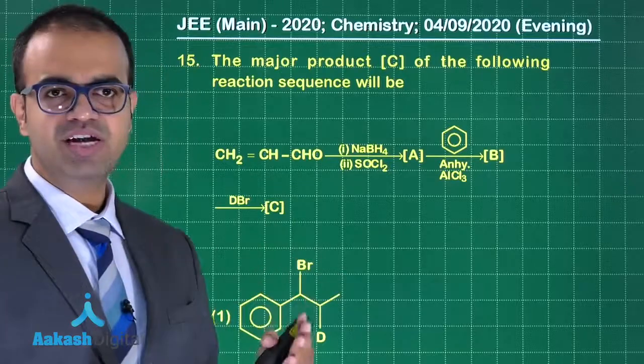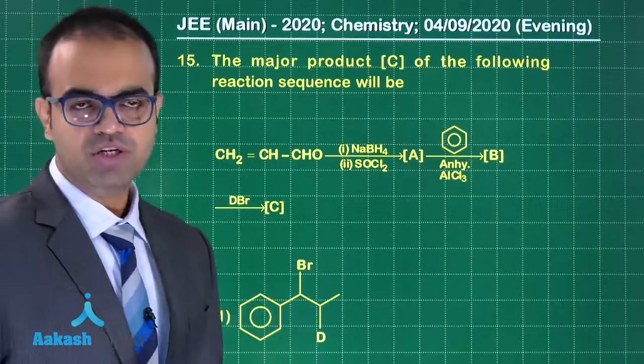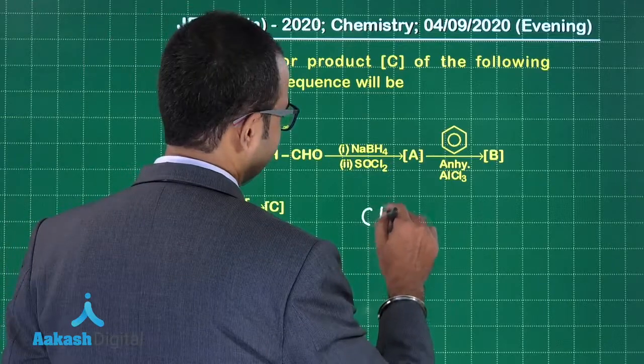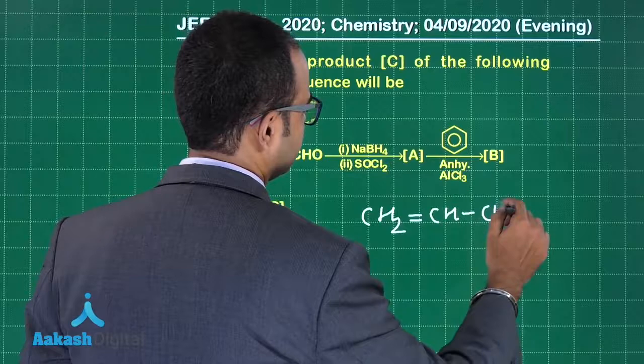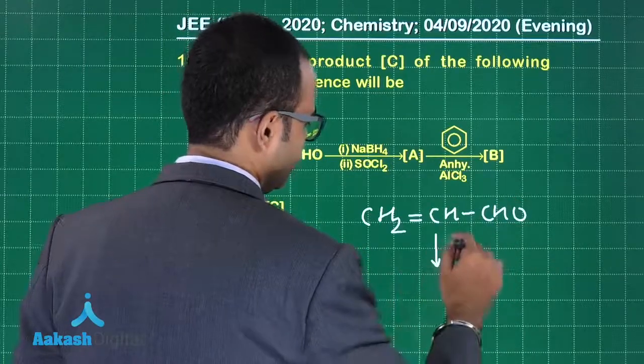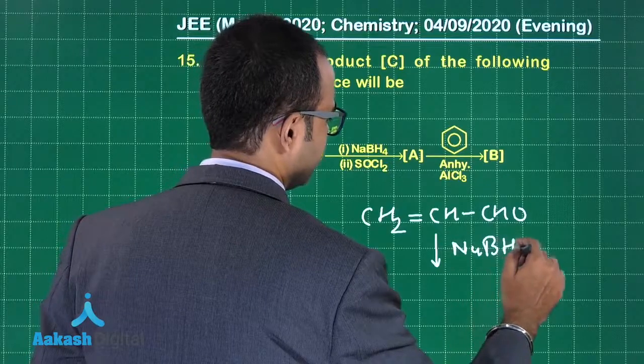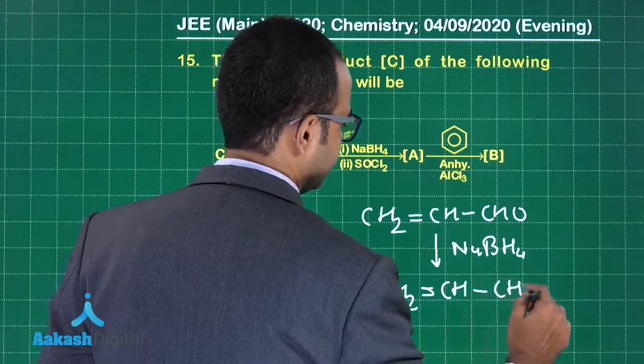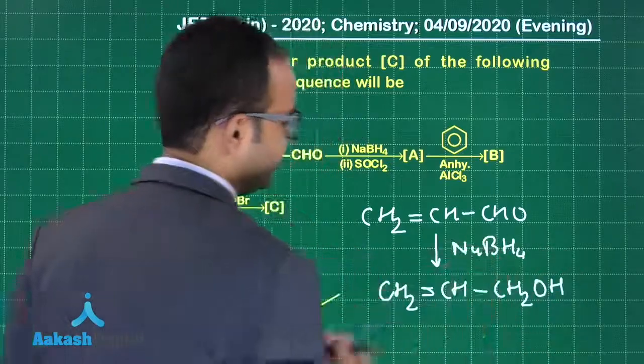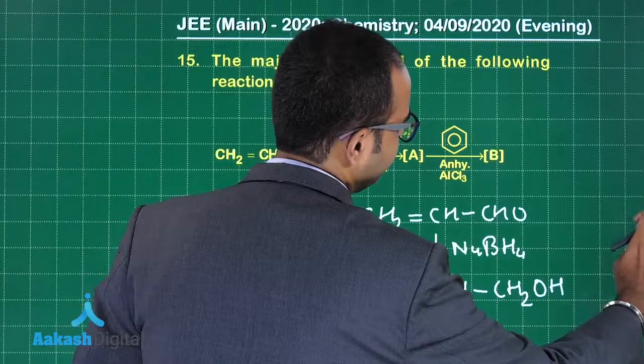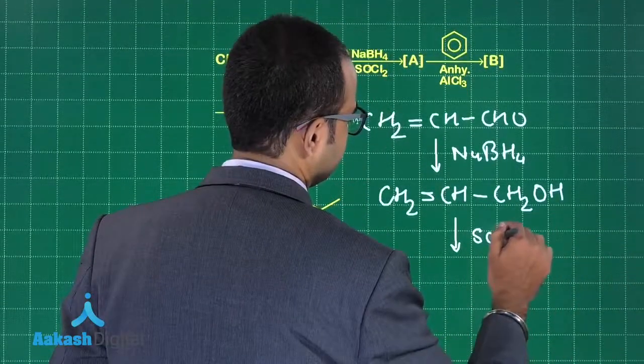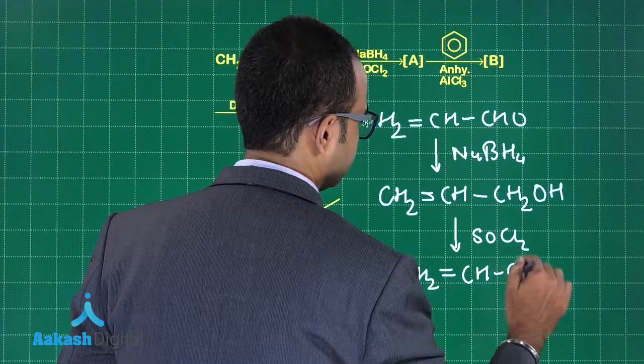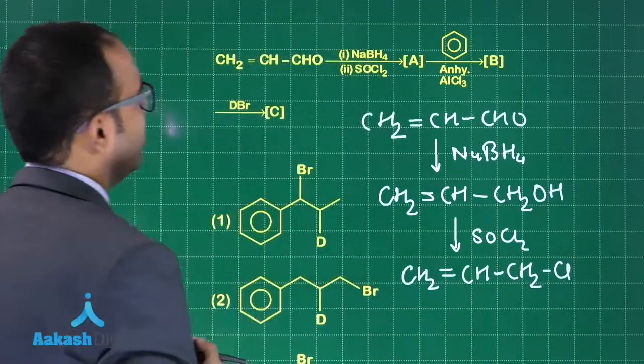Then we are adding SOCl2. What will SOCl2 do? SOCl2 will react with OH and it will give you Cl. First starting with this CHO, we add NaBH4. As we add NaBH4, we are getting CH2OH. Then we add SOCl2, so this will get converted to Cl.